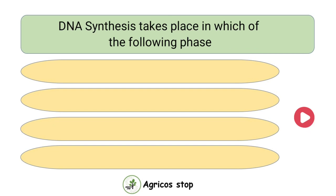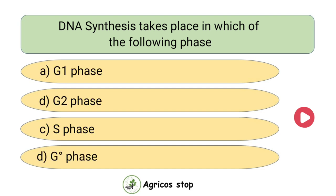DNA synthesis takes place in which of the following phase? Options are G1 phase, G2 phase, S phase, and G0 phase. The answer is S phase. DNA synthesis takes place in S phase.